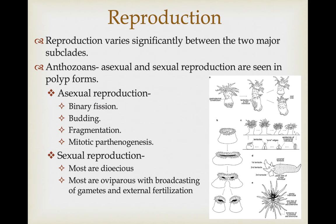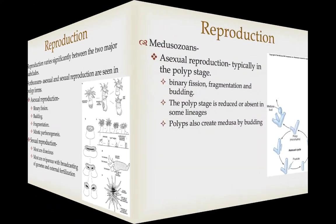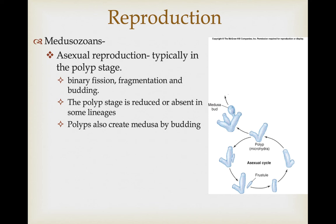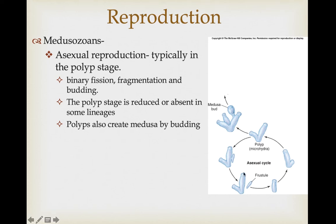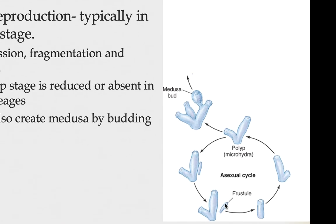Reproduction varies significantly between the two major subclades. In anthozoans, both asexual and sexual reproduction occurs in the polyp form, since there is no medusa stage. Asexual methods include binary fission, budding, fragmentation, and mitotic parthenogenesis. Sexual reproduction: most are dioecious, and most are oviparous, broadcasting gametes for external fertilization. In medusazoans, which have both polyp and medusa stages, asexual reproduction—binary fission, fragmentation, budding—typically occurs in the polyp stage. The asexual cycle can then produce a medusa, which is essentially a clone of the polyp that produces it.